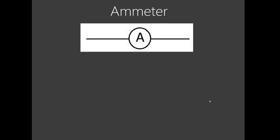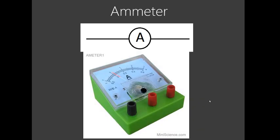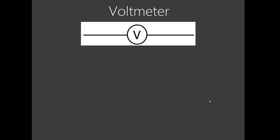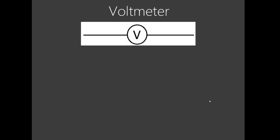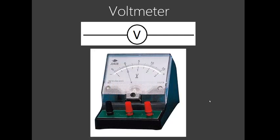Then we have ammeters — the ones used to measure current. You just draw a circle with an A inside. That's an ammeter, and that's how it looks. We will see the details when it comes to practicals: how we use them, how we read them, and how we connect them — everything shall be covered in detail. Then we have a voltmeter, which measures voltage. That means it measures the PD — potential difference — and also the EMF, electromotive force. The difference between the voltmeter symbol and the ammeter symbol is just the letter inside the circle: V for the voltmeter, A for the ammeter.